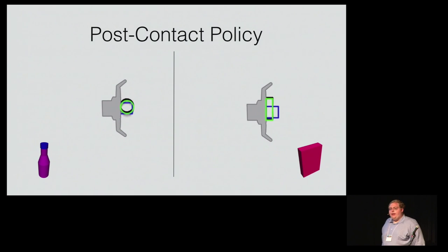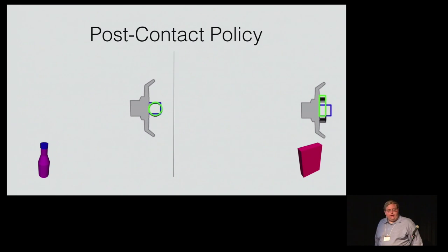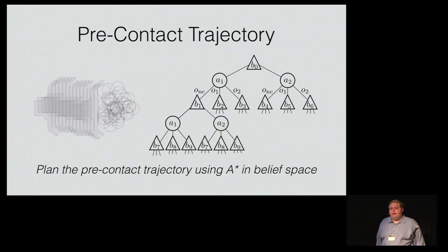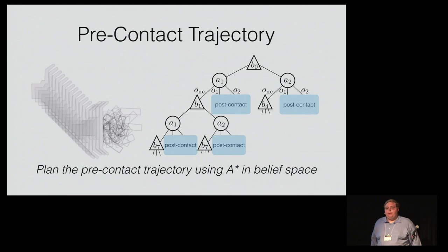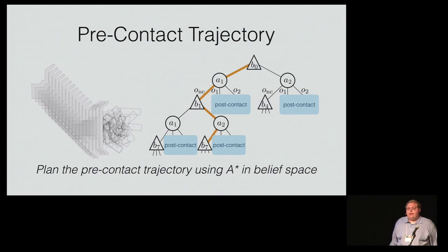These policies use information-gathering actions to localize the object and successfully get it into the blue goal region centered in front of the palm. However, these policies are only valid for post-contact belief states. So we must now solve for a pre-contact trajectory that generalizes these policies to an arbitrary prior. We do this using an A* search in belief space. This is efficient because we've pre-computed the solution for all post-contact nodes, meaning that instead of branching on both actions and observations we're only branching on actions. In the paper we have a proof that shows this decomposition has a bounded effect on the sub-optimality of the overall policy.